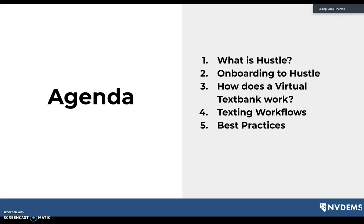Today we're going to talk about a couple of things. First, we're going to talk about Hustle, our texting client that we use to reach out to volunteers and voters. We'll cover how to onboard to Hustle, how our virtual text bank works — the kind of event where we systematically reach out to people via text, especially over Zoom from our own homes. We'll also talk about texting workflows and best practices when talking to people through text.